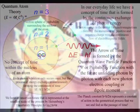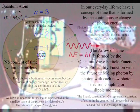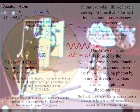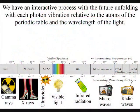This represents an emergent process, with the future unfolding with each photon-electron coupling or dipole moment. In our everyday life, we measure this process as a period of time relative to the atoms of the periodic table and the wavelength of the light.